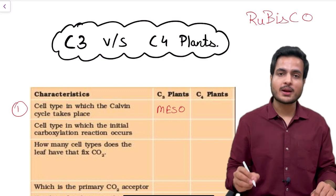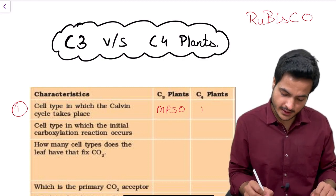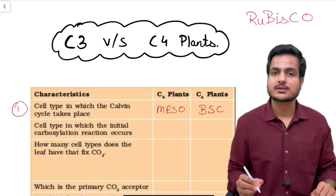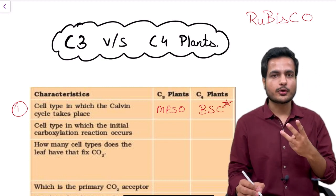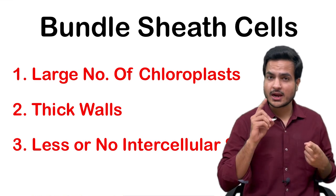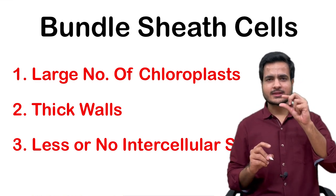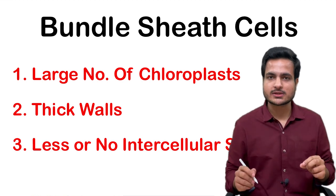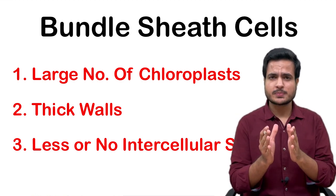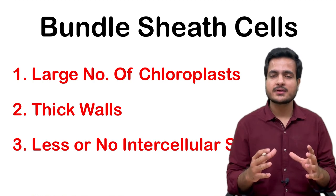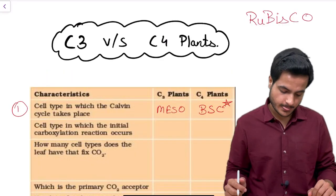But in C4 plants, Rubisco enzyme is present in special cells which are called bundle sheath cells. These cells are special because of 3 important points. First of all, they have a large number of chloroplasts. Second, their walls are thick and they do not allow gases to pass through. And third, they have very little intercellular spaces because these are compactly packed around the vascular bundle of the leaf.